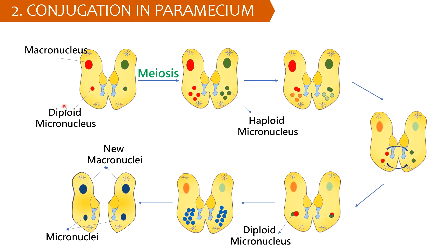Conjugation in paramecium: In conjugation, a conjugation bridge is formed between two cells known as conjugants. The macronuclei of both cells disappear and by meiosis, the micronuclei form four haploid nuclei. Three of them degenerate, and the remaining one haploid nucleus of each cell fuses to form a diploid micronucleus, and cross-fertilization takes place. The conjugants then separate to form exoconjugants, which are identical to each other but different from their parent cell. Later, each exoconjugant undergoes further division and forms four daughter parameciums.